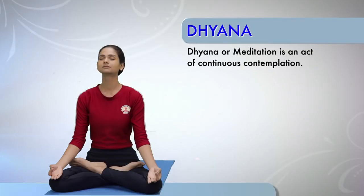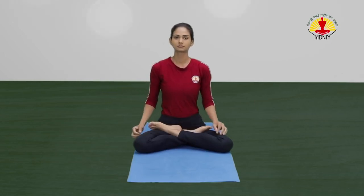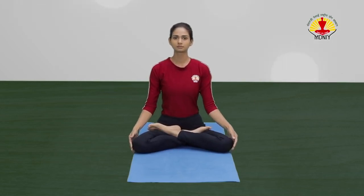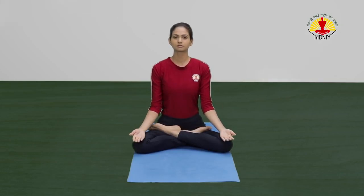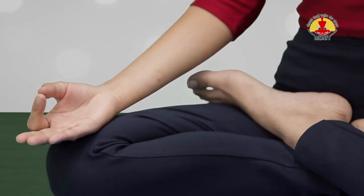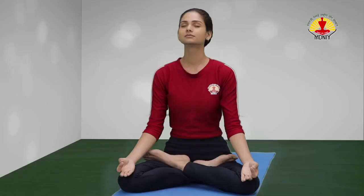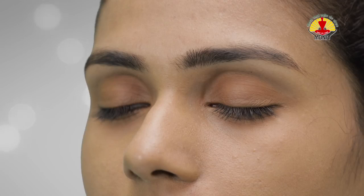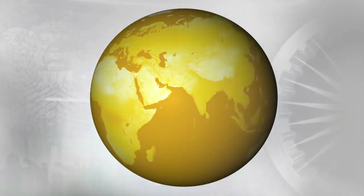Dhyana. Sitting in any comfortable position, place the hands on the knees in Jnana Mudra. Close your eyes and sit with a slightly upturned face. You need not concentrate. Just maintain a mild focus between the eyebrows and be conscious of your breath. Let them flow freely. Just observe the flow. If possible, let the thoughts disappear.